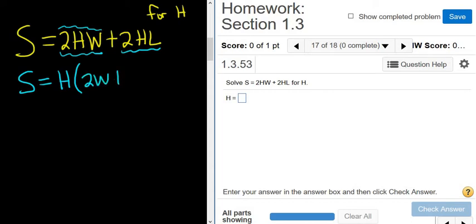Then we have a plus sign, and then the question is, what do we multiply by H in order to get 2HL? Well, we're missing the 2L.